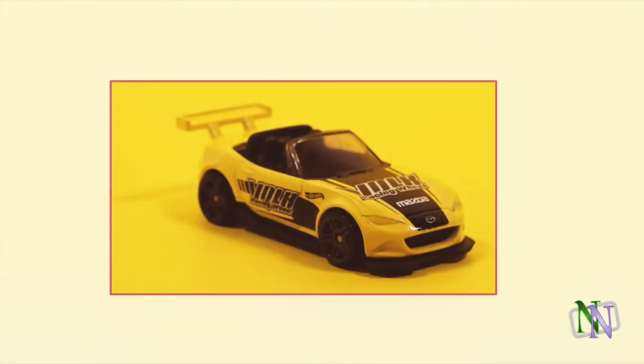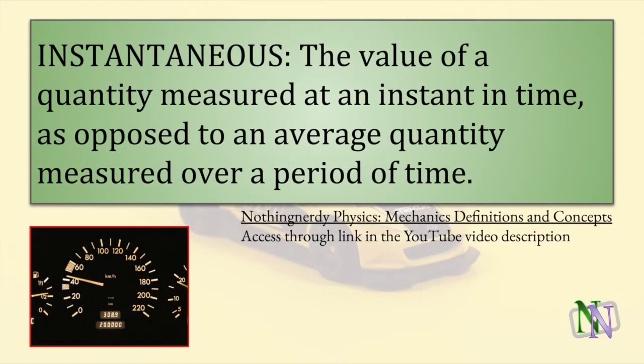We do not know if the car in the example is running at a constant speed. So the value we calculate is its average speed. At some point it could be driving faster and another more slowly than the average. The speed it has at a particular moment is called its instantaneous speed. This definition is an excerpt from the Nothing Nerdy Definitions and Concepts Dictionary, which you can download for free at a link in the video description on YouTube. An instantaneous value is one which is measured at an instant in time. The instantaneous value is what a speedometer shows at each instant, though the speed will change from moment to moment. This contrasts with an average, which is measured over a period of time.